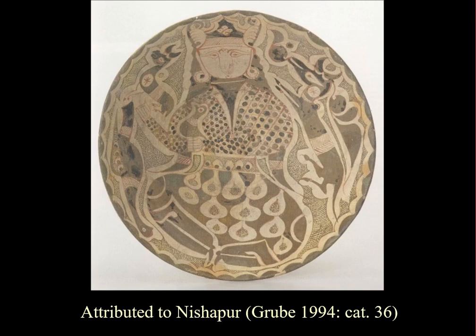Here's another slip-painted ware. It's a pink body with a white overall slip, then covered with slip paint — a clay medium paint. There are iron-rich red bits and blacker bits, and it has an overall lead glaze. The lead glaze and the slip paint will often be found together.